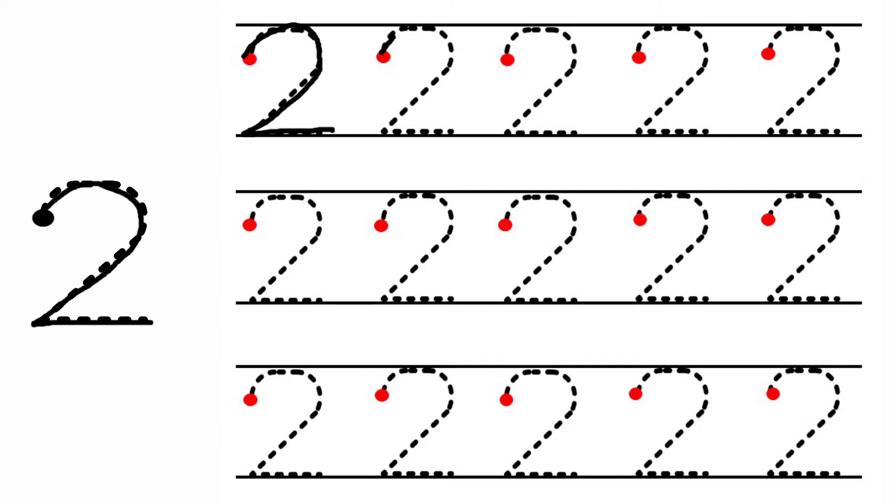Again we are going to draw a curve, then sleeping line. Now we got number 2. This is how we write number 2. First we have to draw a curve, then we have to put sleeping line. Now we got number 2. First we have to put curve and then sleeping line.